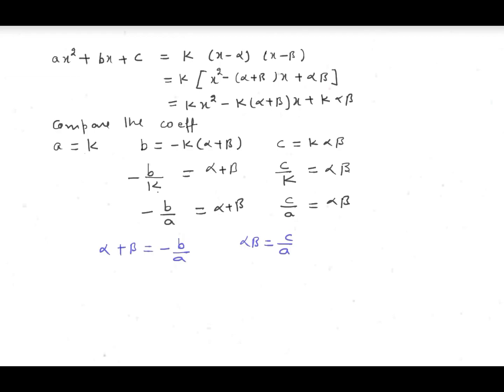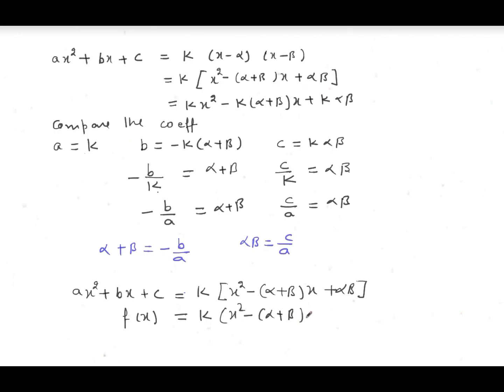Now I'll explain how to write a quadratic polynomial when the sum and product of its zeros are given to you. You write ax^2 plus bx plus c equal to k[x^2 minus (alpha plus beta)x plus alpha·beta]. So f(x) equals k times [x^2 minus (sum of zeros)x plus (product of zeros)]. Whenever the sum and product of zeros are given, just substitute the values and you will get the quadratic polynomial.